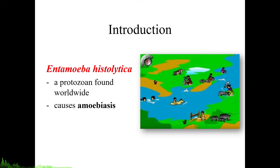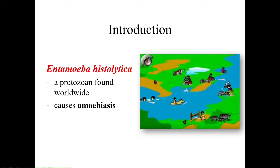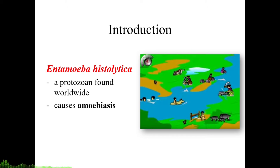Entamoeba histolytica is a protozoan found worldwide, and it is the primary cause of amoebiasis. The highest prevalence of amoebiasis is in developing countries where barriers between human feces and food and water supplies are inadequate. Most cases of amoebiasis are asymptomatic, but dysentery and invasive extra-intestinal disease can occur, as we will learn in this lecture.